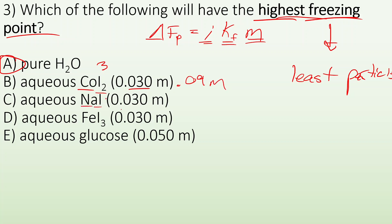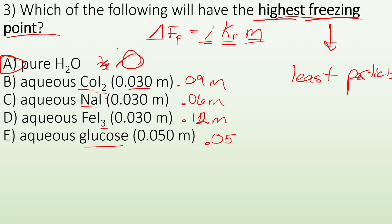NaI is going to break up into two, so we'd end up with 0.06 molal. FeI3 would break up into four, so we'd end up with a 0.12 molal concentration of particles. Aqueous glucose is a covalent compound, a non-electrolyte — we'd still just have 0.05 molal. But pure water means we have zero particles in there, so it's going to have the highest freezing point.